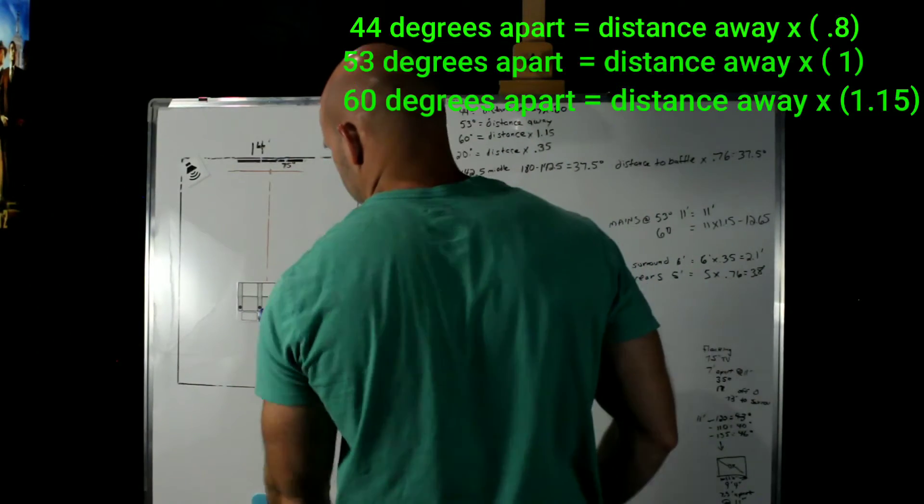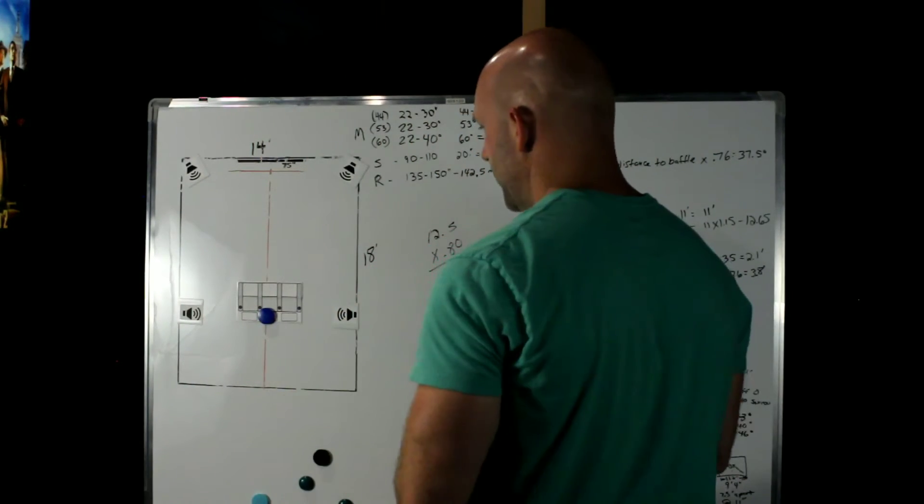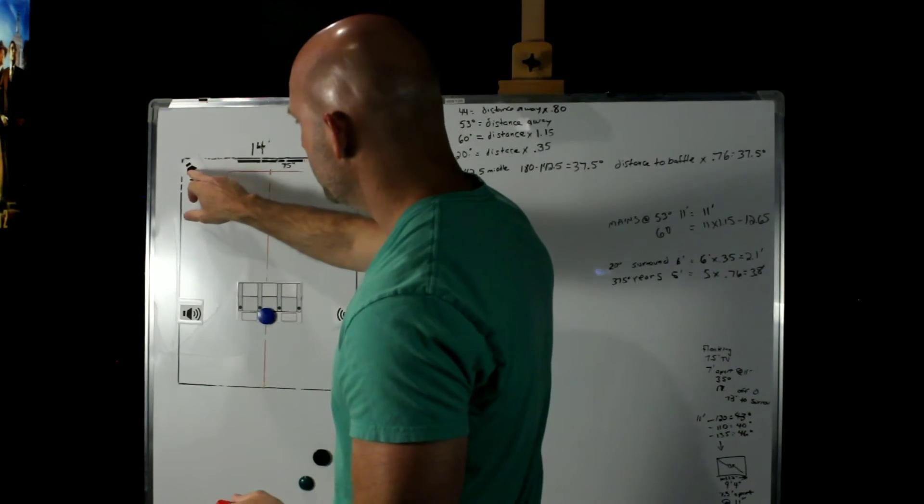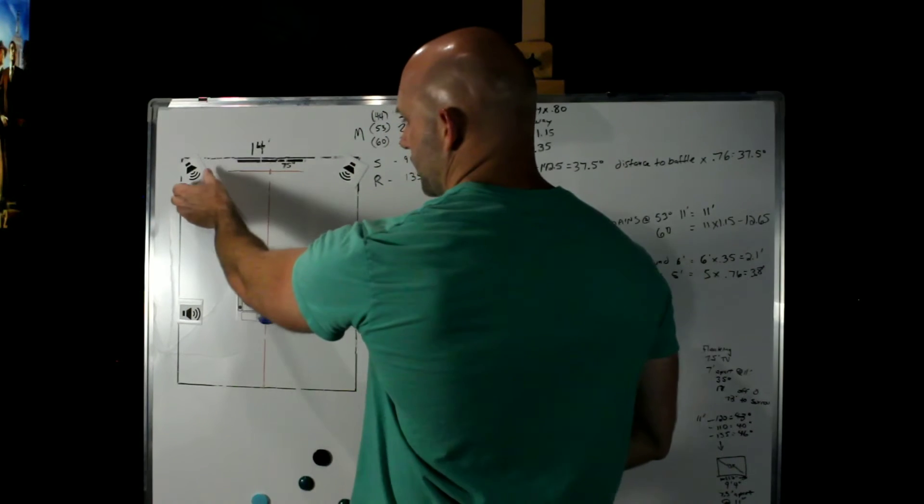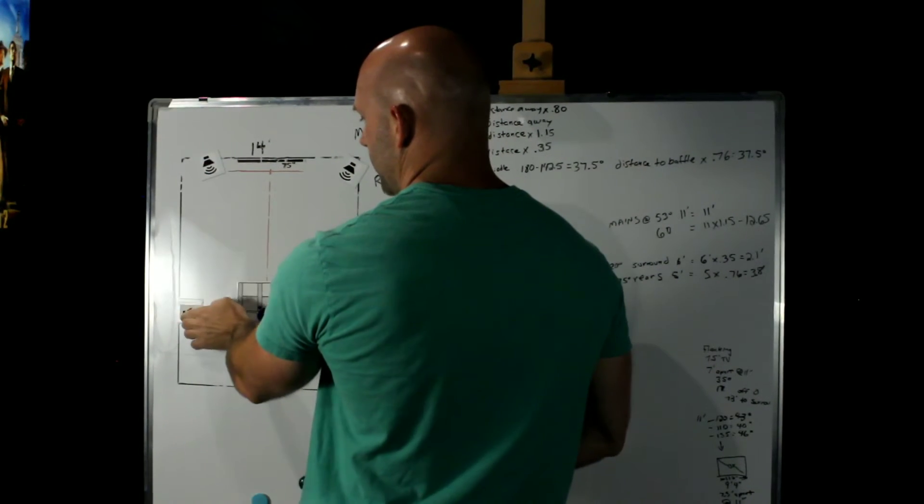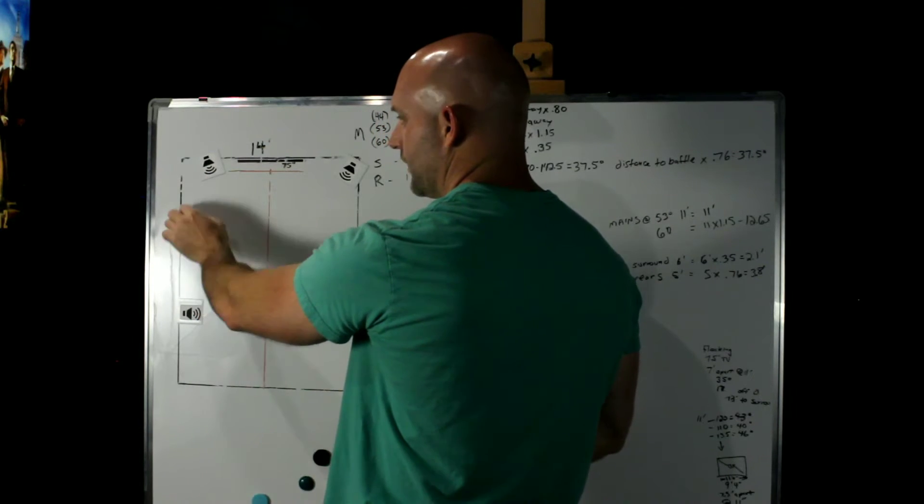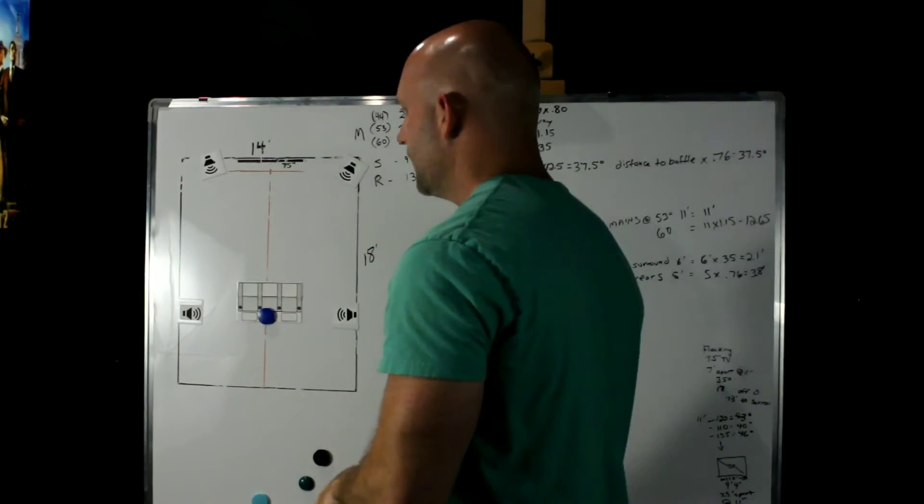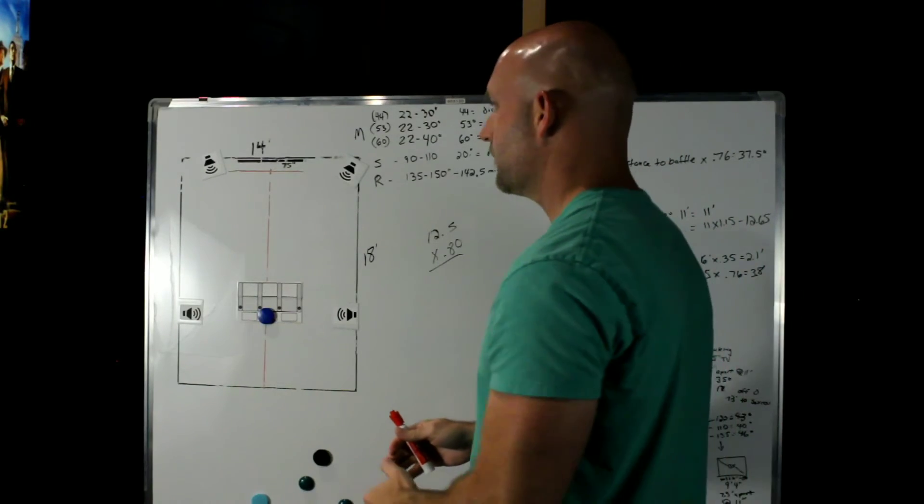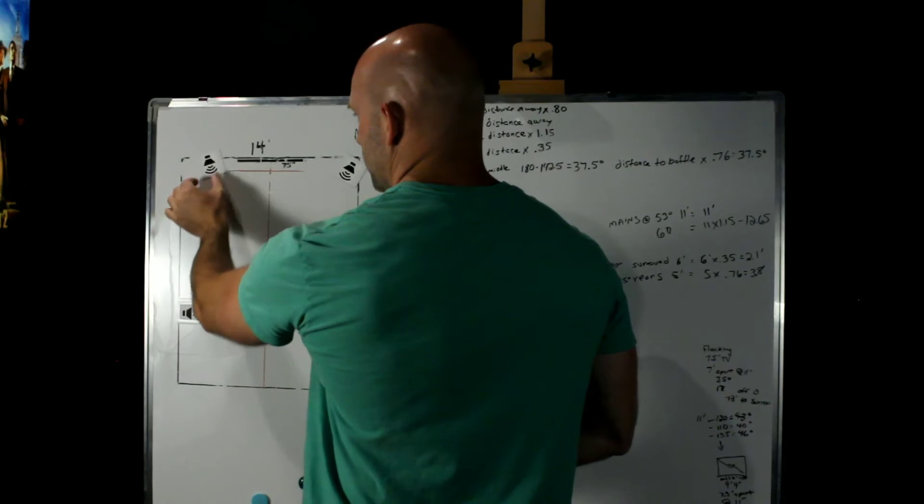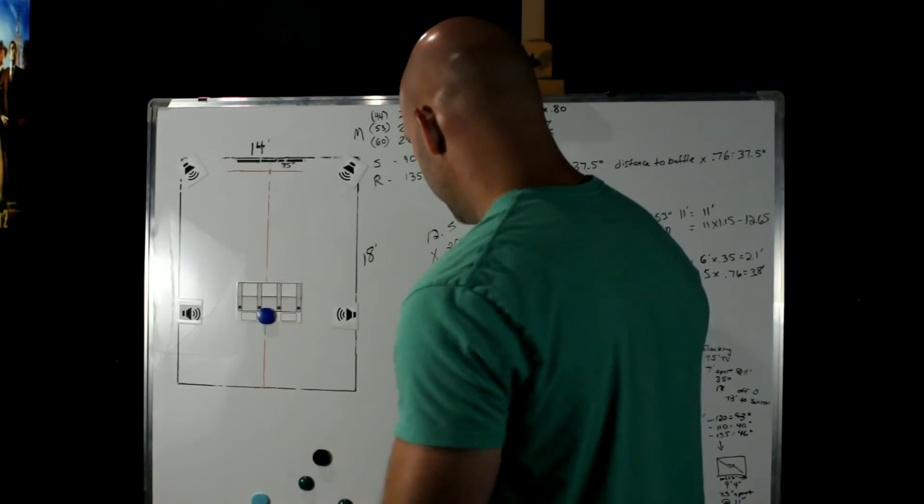Now, if you notice, what that's going to do is our surrounds are at 90 degrees in a 7.1. In 5.1, they're going to get pulled back a little bit, but this gives us 60 degrees here, another 60 degrees to this point. So 0, 30, and 90. If we go smaller or closer together with our mains, we're widening this gap right here. We have a greater distance we've got to cover. So when objects are panning around, they're actually going to begin to drop out and we don't want that.